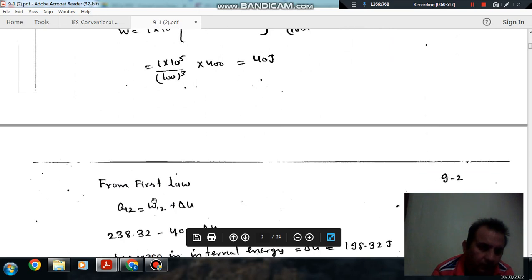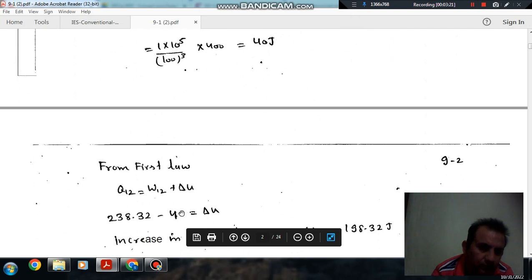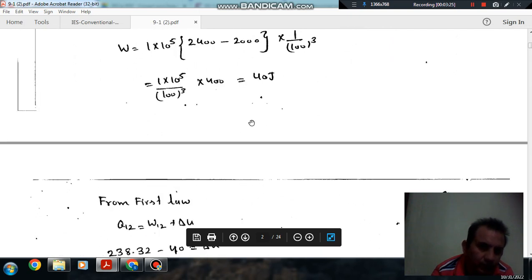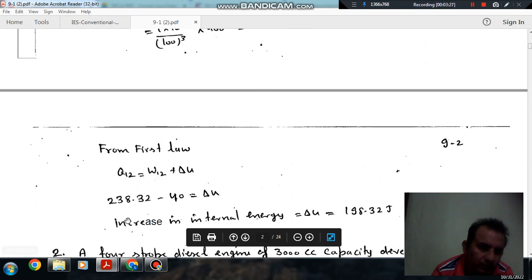From the first law of thermodynamics, we have Q₁₂ equals W₁₂ plus ΔU. So here W₁₂ is 40 joules and Q₁₂ is 238.32, and change in internal energy is 198.32 joules.